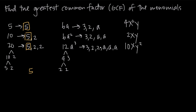Now our monomials are completely factored into their prime factors, and we need to look for common factors. Starting with the first factor in 6a, we have 3 — and we can see that we have 3, 3, and 3, so that factor is common to all three monomials. We can also see that 2 is a factor common to all three monomials, so we can pull that out. We have an extra factor of 2 for the 12, but that extra 2 is not in either of the first two monomials, so we can't pull it out.